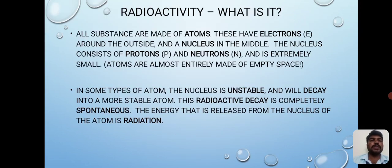Radioactivity. All substances are made up of atoms. These have electrons around the outside and a nucleus in the middle. The nucleus consists of protons and neutrons and is extremely small. In some types of atoms, the nucleus is unstable and will decay into a more stable atom. This radioactive decay is completely spontaneous. The energy that is released from the nucleus of an atom is radiation.